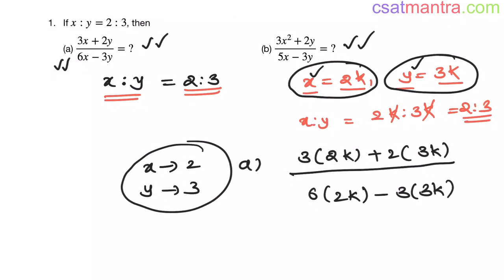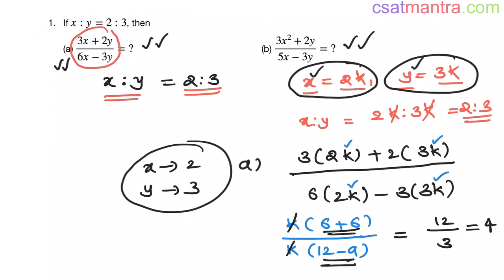Now I want you to pay attention here. K is common in numerator, so I am taking k common: 3×2 is 6, 2×3 is 6. K is also common in denominator: 6×2 is 12, 3×3 is 9. If you observe, there is no k here and here—k gets cancelled. So our final value is independent of k: 12 by (6+6 is 12), 12-9 is 3. This equals 4. Our final value of this problem is independent of k.